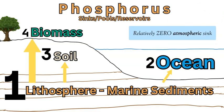The phosphorus cycle is closely linked to other biogeochemical cycles, especially the nitrogen cycle, and also sulfur, water, and carbon cycles. They all have major storage areas in the Earth's system called sinks, pools, or reservoirs. For the phosphorus cycle, these are the lithosphere or marine sediments, the oceans, the soil, and biomass. It does not have the atmosphere as a major sink — there is only a very small quantity of phosphorus moved through the atmosphere via sea spray, dust, or pollen. It is the only biogeochemical cycle that doesn't involve the atmosphere in a large capacity.